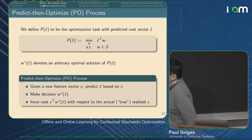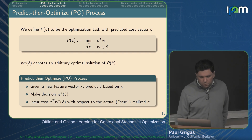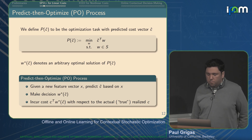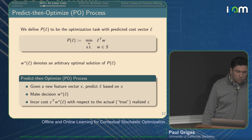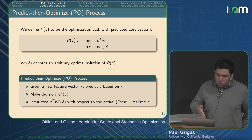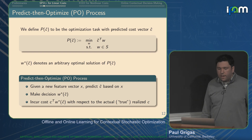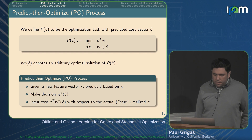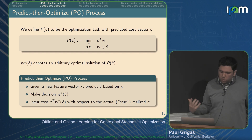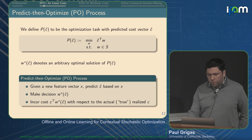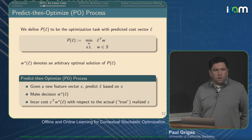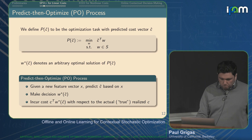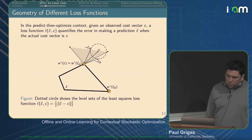The predict-and-optimize process is this: we form a nominal optimization problem given some prediction of the cost vectors, which I call ĉ — minimize ĉ-transpose w. Given any new feature vector x, we make our prediction ĉ based on x using some prediction function, then make a decision w*(ĉ), which is an optimal solution to that problem. Ultimately we incur some cost with respect to whatever value of c is actually realized — for example, whatever travel times we actually incurred on the network.